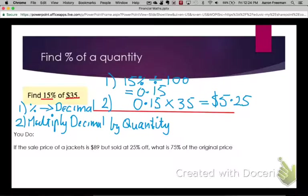Now try that with the jacket question below. The regular price of the jacket is $89, it's sold at 25% off. So what is 75% of the original price? Pause the recording and do it on your own and then I'll solve it for you when you play again.